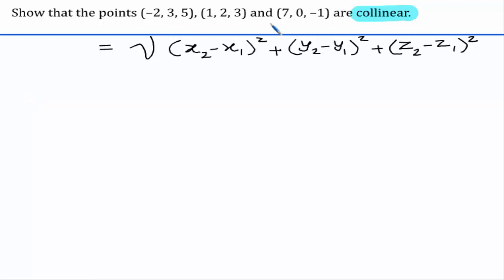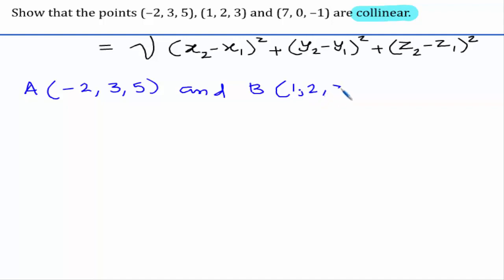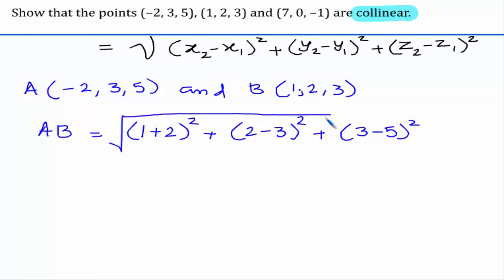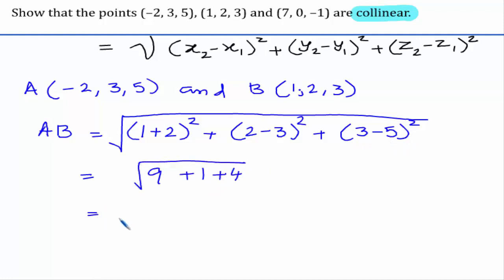Let us consider A as (-2, 3, 5) and B as (1, 2, 3). AB equals the square root of (1 minus of minus 2, plus 2) whole square plus (2 minus 3) whole square plus (3 minus 5) whole square. This is 3 squared is 9; 2 minus 3 is minus 1, whole square is 1; 3 minus 5 is minus 2, whole square is 4. This gives us square root of 14.